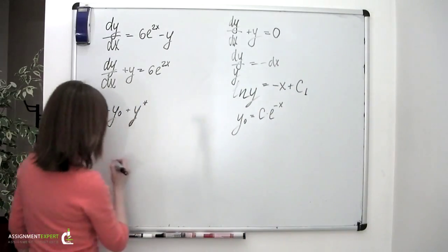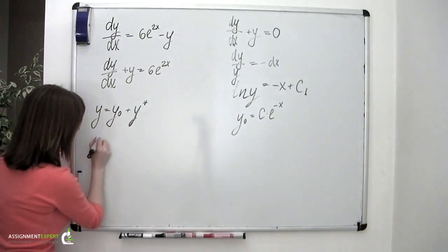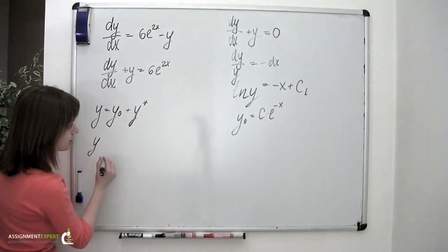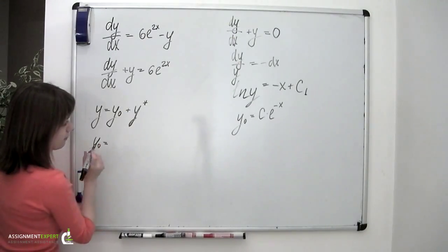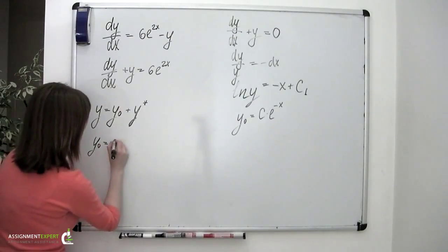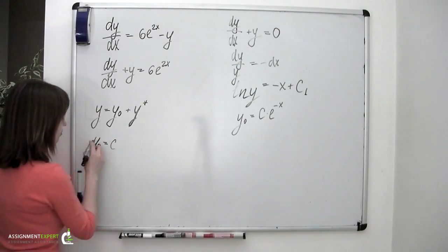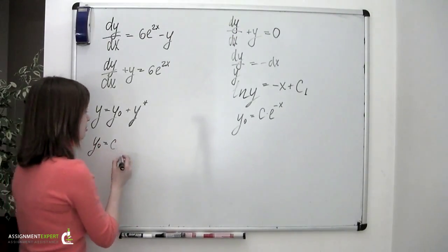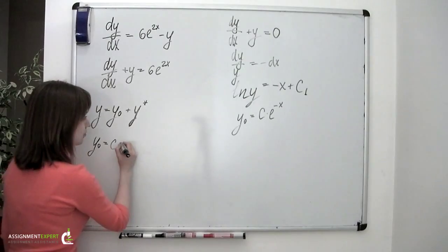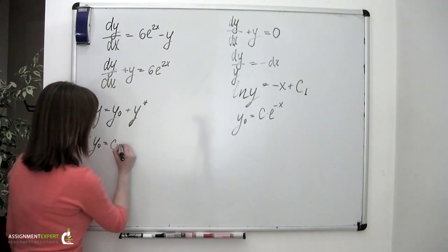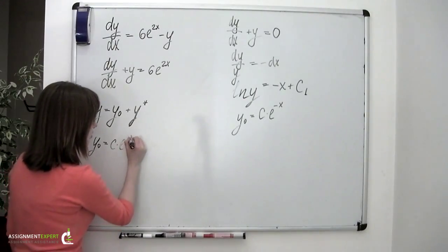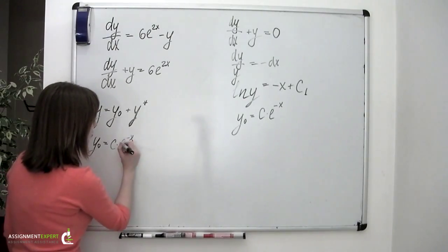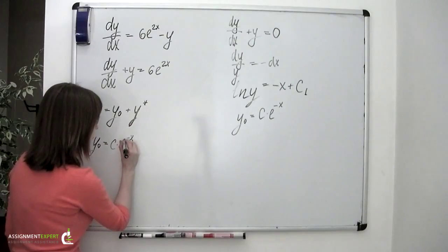So this is the solution of the homogeneous differential equation corresponding to the initial one. Let me just write it: y₀ equals C times e to the power of negative x.